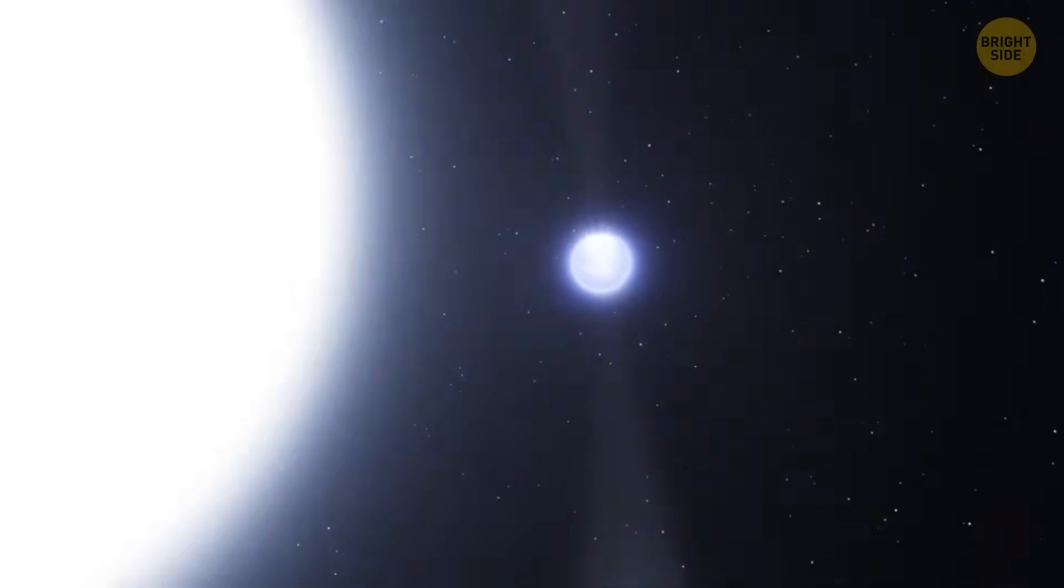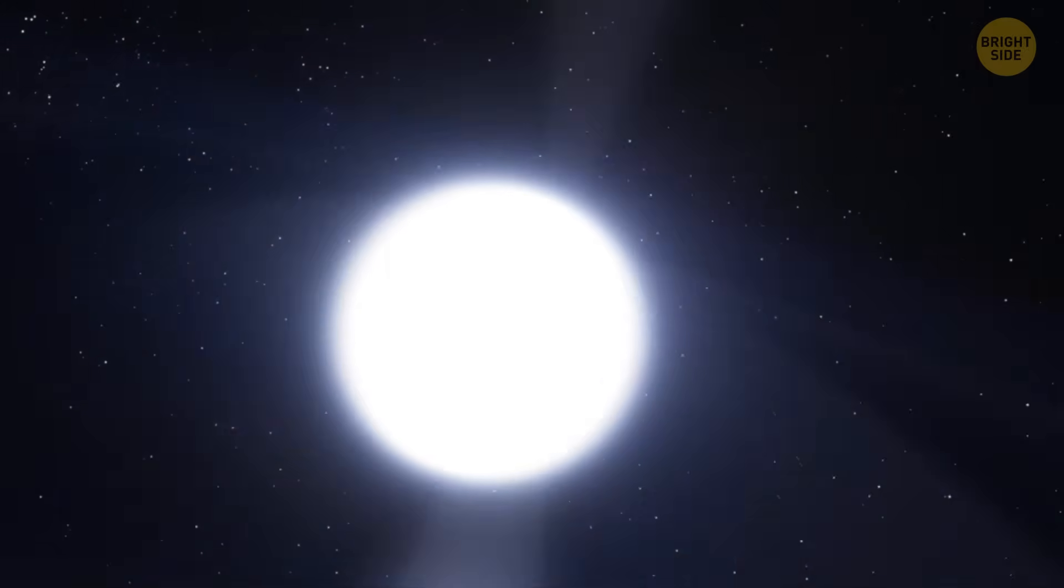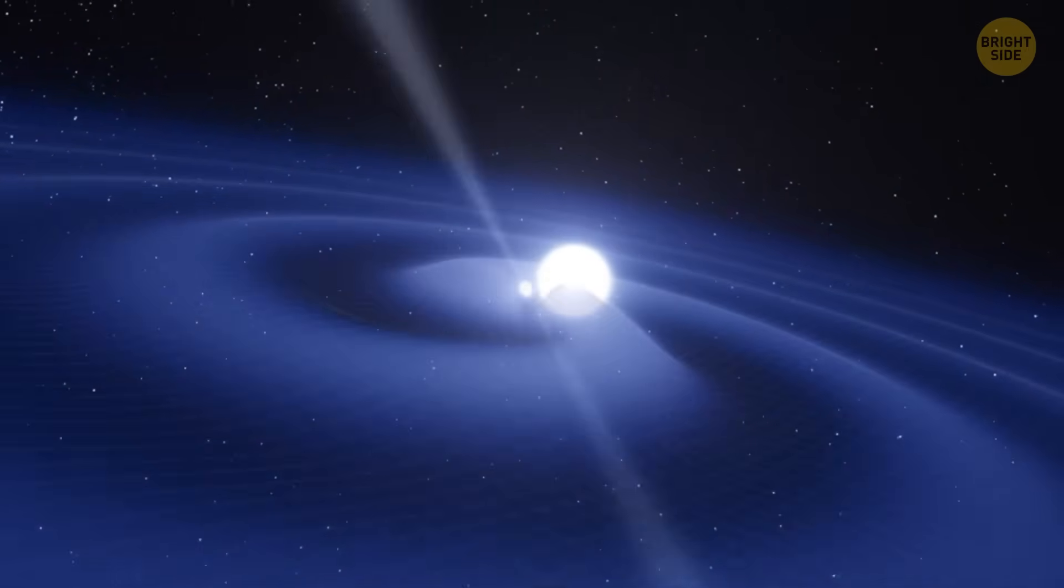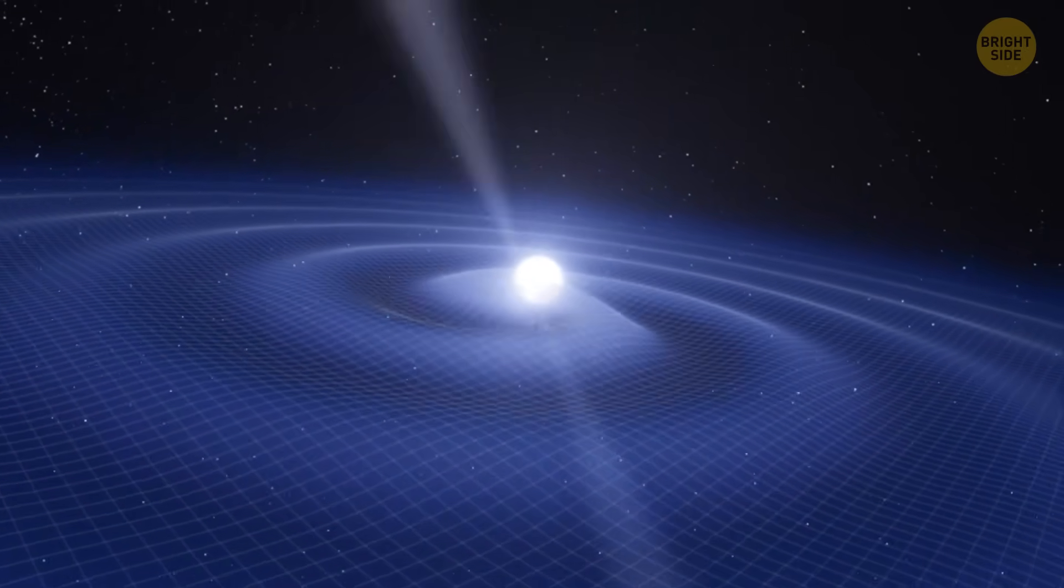This is the most dramatic type of a binary system. A neutron star spins with unbelievable speed and doesn't just hang out with its companion star, but slowly devours it.